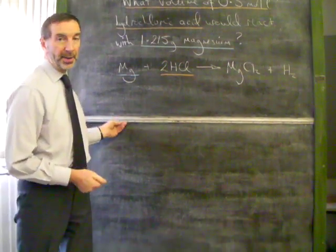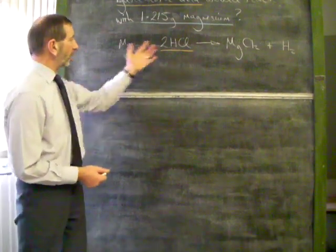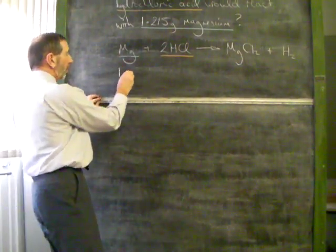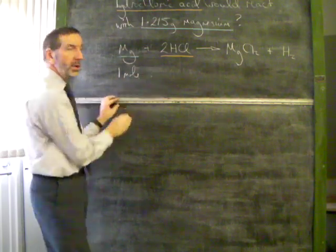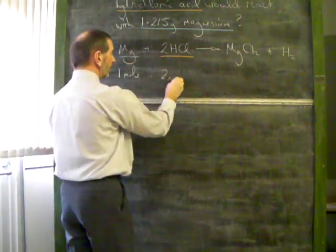You're given a balanced equation. Think of the equation like a recipe. According to this equation, every time we require one mole of magnesium, we require twice as much hydrochloric acid - two moles of acid.